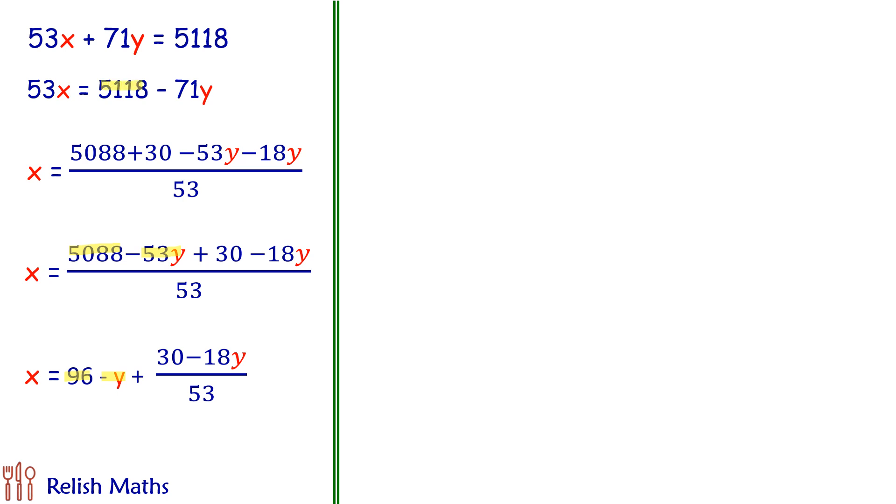Basically 5118 divided by 53 gives quotient as 96 and here the remainder is 30. So this remainder is what we have written down here.